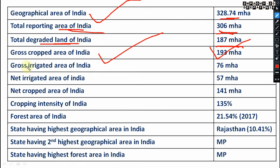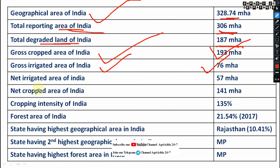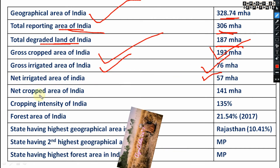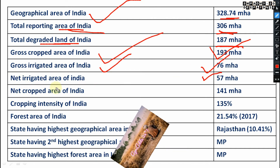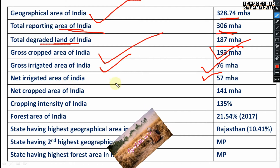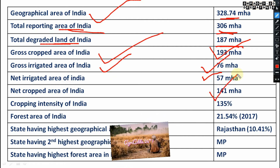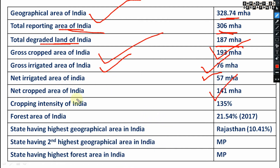The gross cropped area of India is 193 million hectares. The gross irrigated area of India is 76 million hectares. The net irrigated area of India is 57 million hectares, and the net cropped area of India is 141 million hectares.